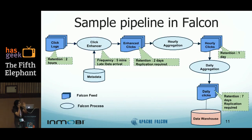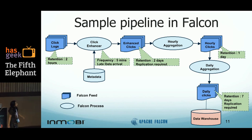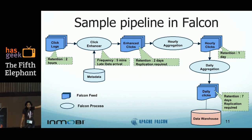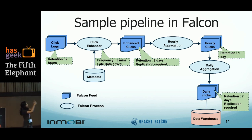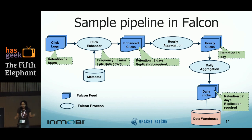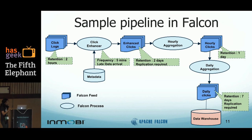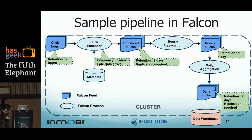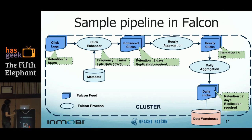When you look at the pipeline we've been talking about, everything remains the same. The only thing is the datasets have now become Falcon feeds, the processes have now become Falcon processes, and the other operations that were auxiliary to your main business logic — shown in dotted lines — means Falcon has started managing those for you. So you don't have to write your cron jobs any longer. All of this happens within what we call the Falcon cluster within your Hadoop cluster.